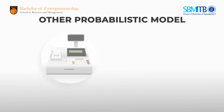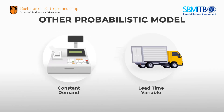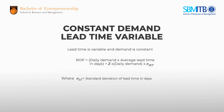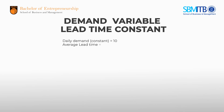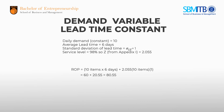When lead time is variable and demand is constant, we use this ROP formula. If Linda has a daily demand of 10 pieces, an average lead time of 6 days, a standard deviation of lead time of 1 day, and a service level of 98% — so Z from the Z-table is 2.055 — then using the formula we get 80.55, so the reorder point is about 81 pieces.